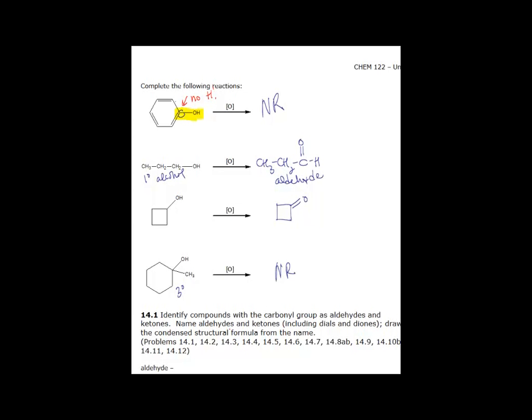The second reaction, the alcohol that we're dealing with is 1-propanol. It's a primary alcohol. So we do have hydrogens to remove, and we can make an aldehyde.